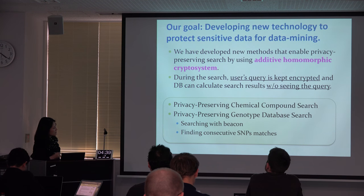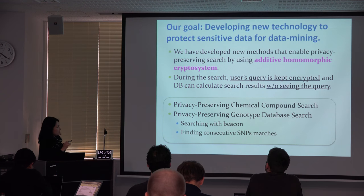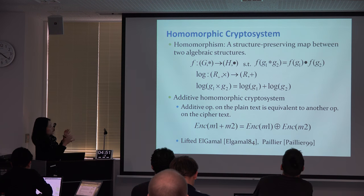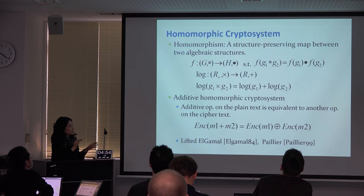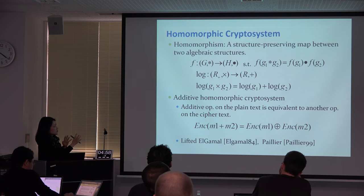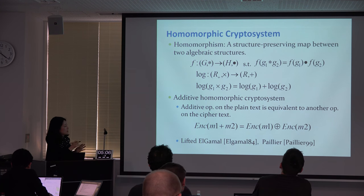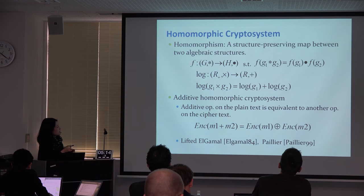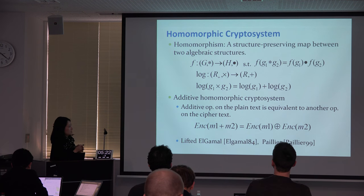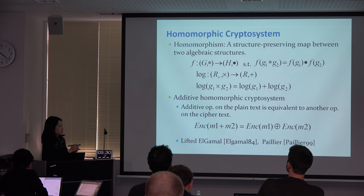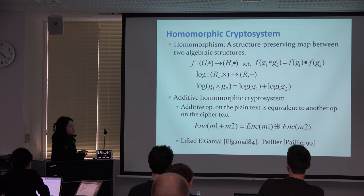We have already developed three applications: one is chemical compound database search, and the other two are genomic data searches. Homomorphic encryption is a structure-preserving map between two algebraic structures. The logarithm is a good example: log(G1 × G2) equals log(G1) + log(G2). Some encryption systems have this homomorphic property, meaning that the encryption of M1 + M2 equals some algebraic operation between encrypted M1 and encrypted M2. We use this technique.